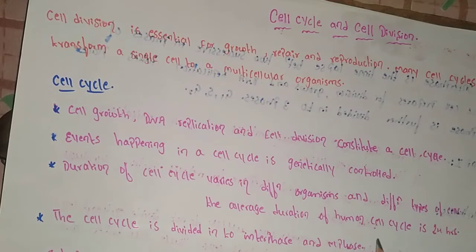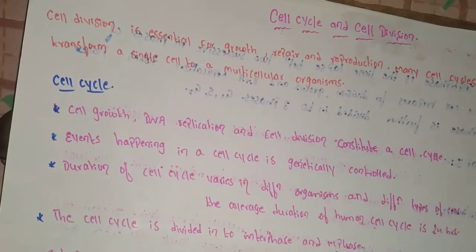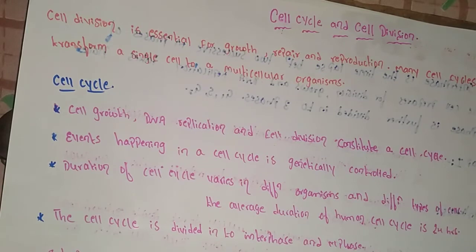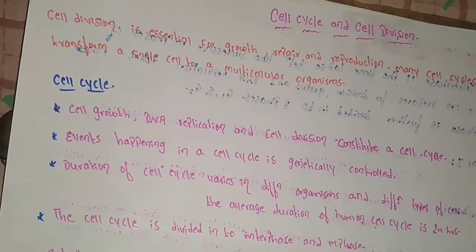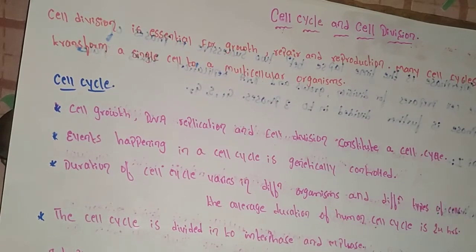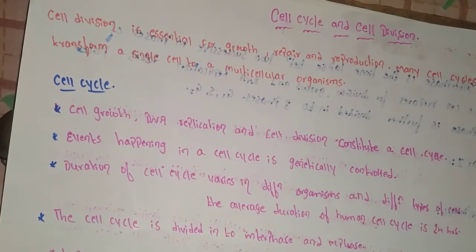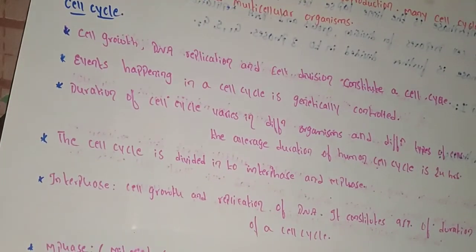The average duration of the human cell cycle is 24 hours. For example, yeast completes its cell cycle in 90 minutes. The cell cycle is divided into two phases: interphase and M phase. M phase is mitosis, while interphase involves cell growth and DNA replication, constituting 95% of the cell cycle duration.